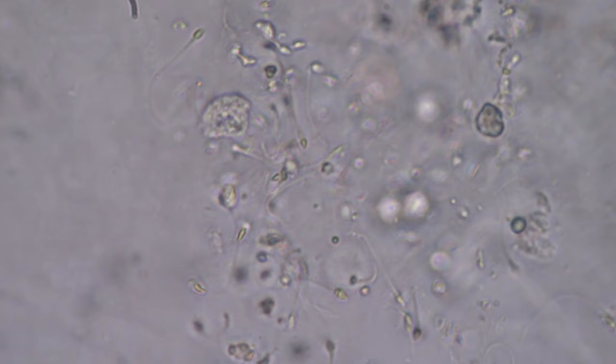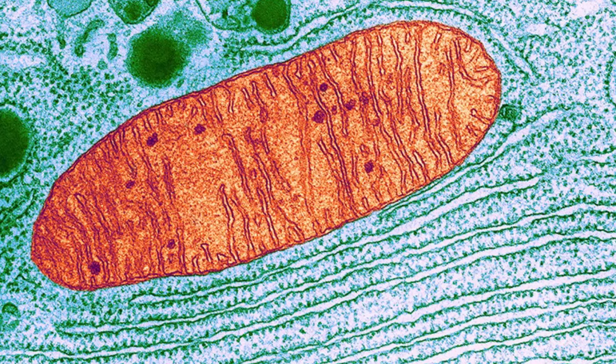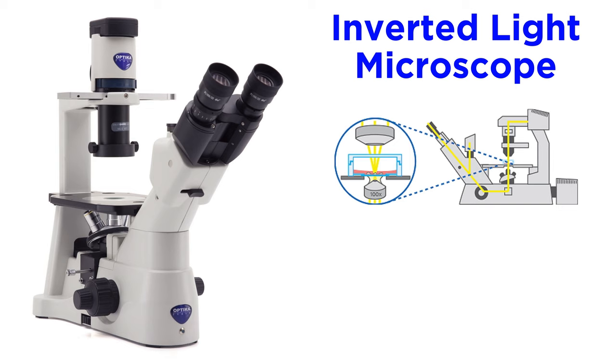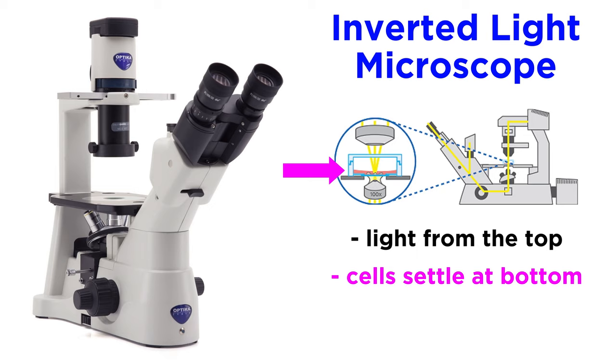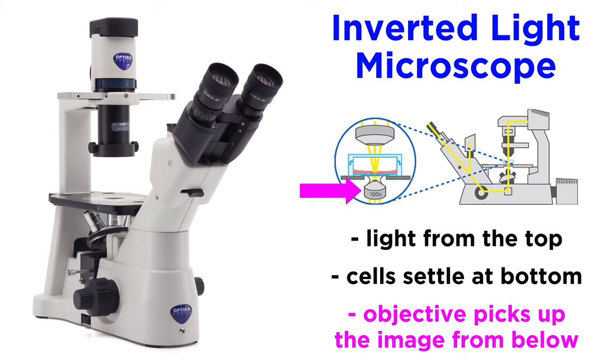Light microscopes are commonly used to study bacteria, slices of tissue, liquid samples, and some mitochondria. Inverted light microscopes, which have the light source coming from the top and the objective under the stage, are often used to study tissue cultures, like cells covered by liquid media, as cells settle to the bottom of the flask where the objective can pick up the image.